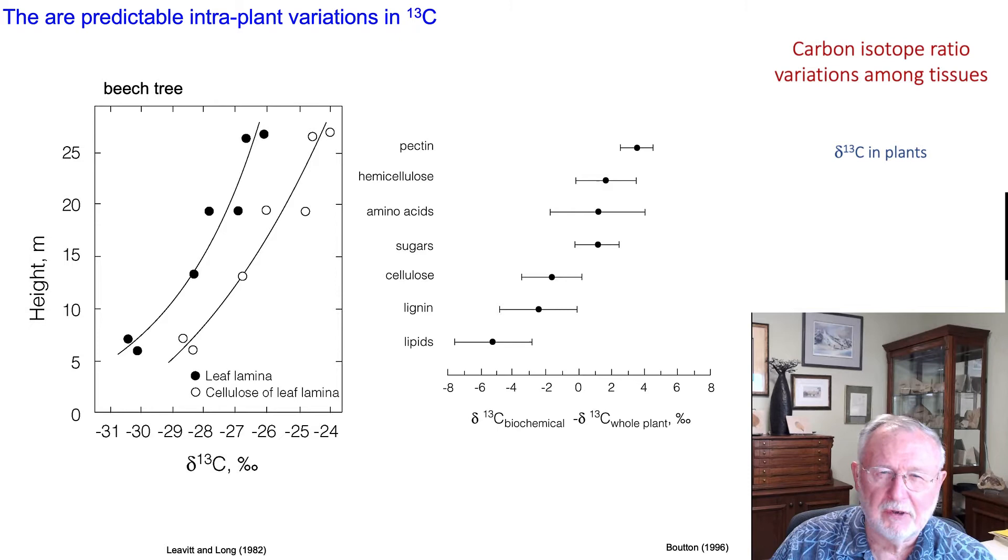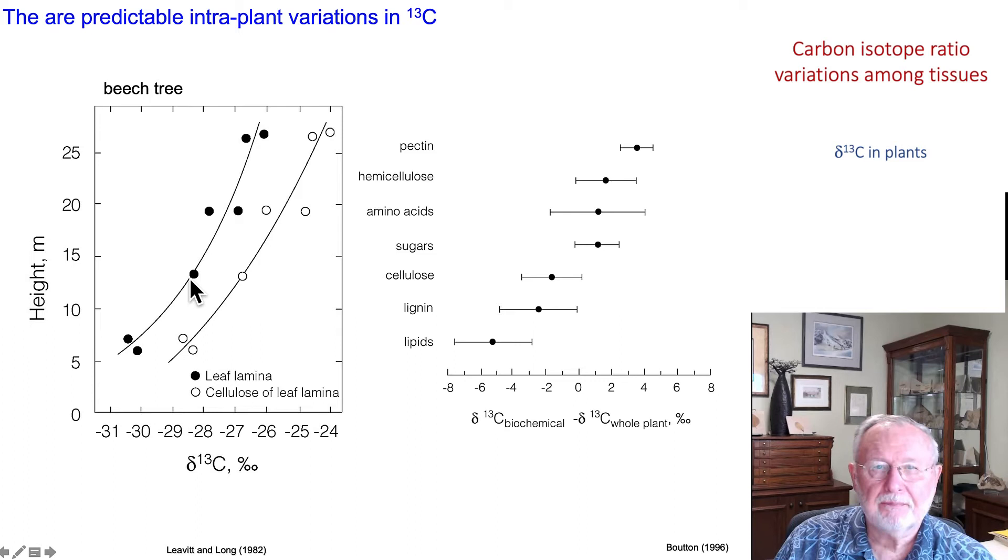But you'll also see that the cellulose shows a similar variation. In general, if people are interested in tree rings or in cellulose, a rule of thumb is that cellulose is about 2 per mil enriched in 13C relative to the leaf. John Roden will say more about that in his lecture on tree rings.